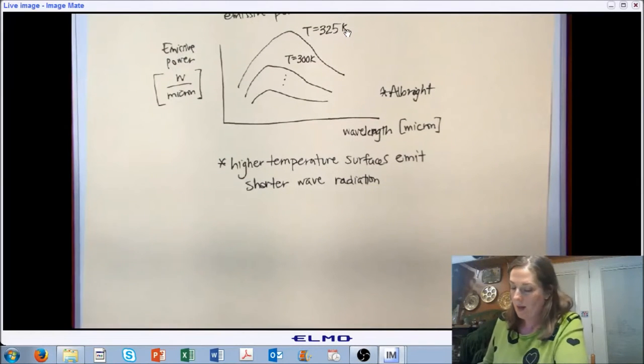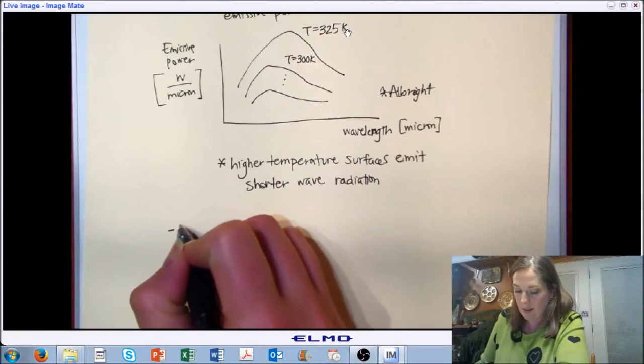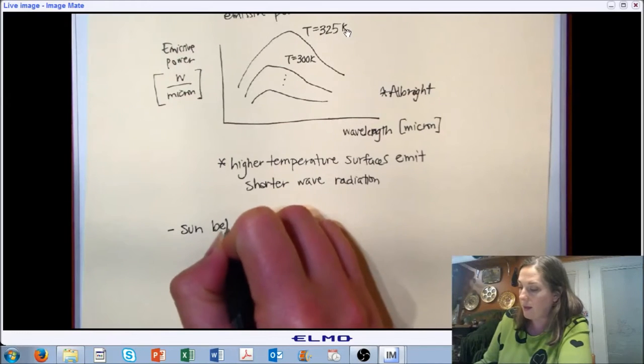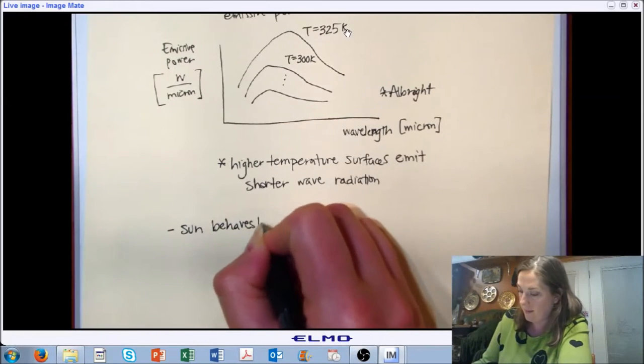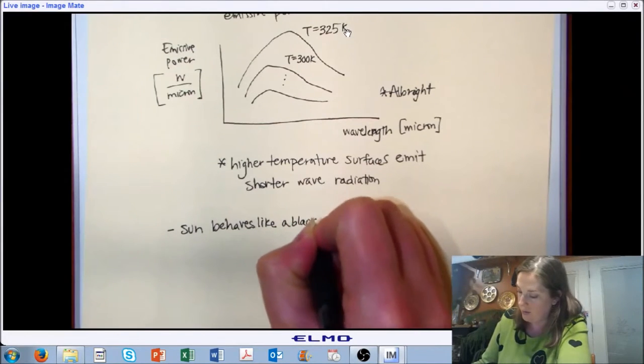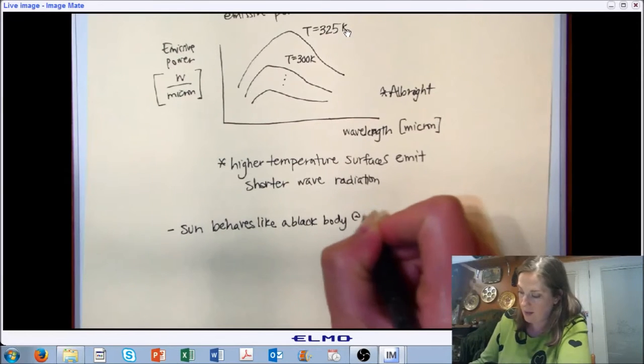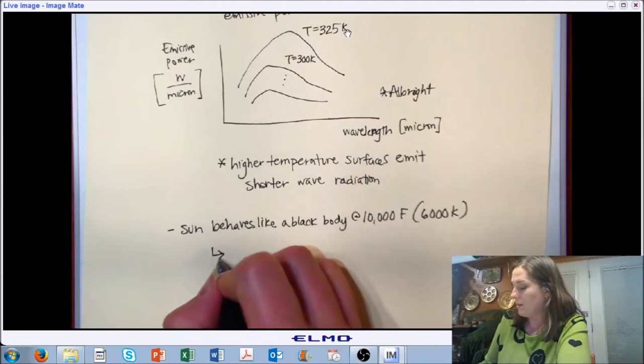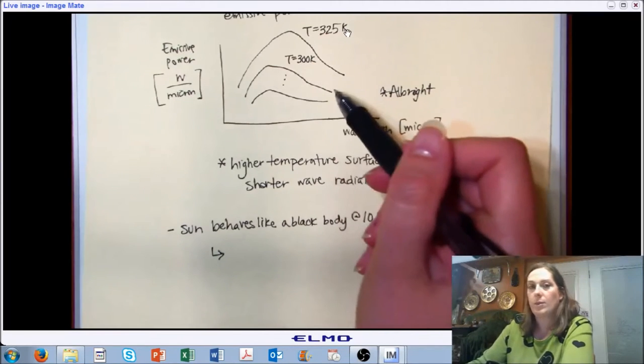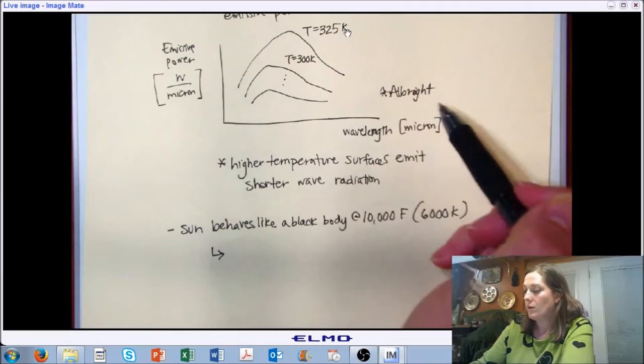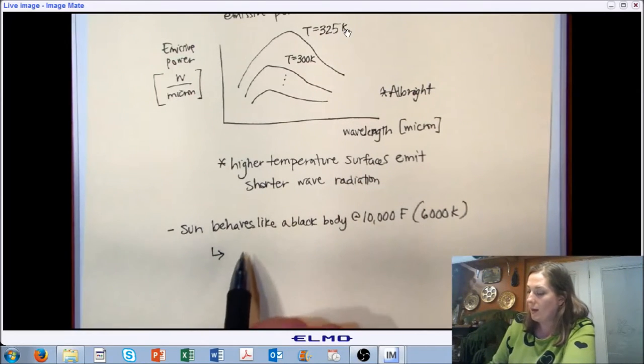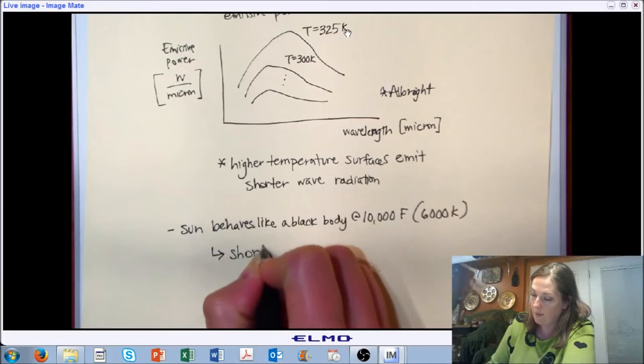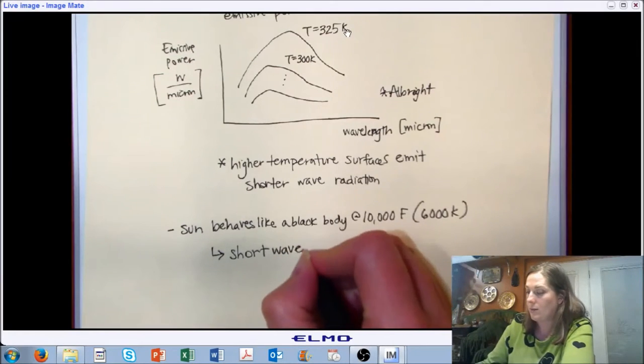Let's apply this to essentially our two surfaces that we're going to be looking at for calculating solar radiation. Let's start with the sun. Our sun is going to behave like a black body at a very high temperature, 10,000 degrees Fahrenheit or 6,000 Kelvin. As we follow our laws above, the higher the temperature, the shorter the wavelength of the radiation. If the sun is at this very high temperature, you're going to get very short wave radiation. Most of the emissive power is going to be at very short wavelengths.